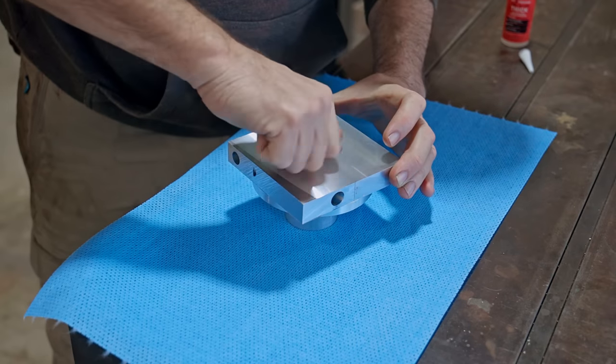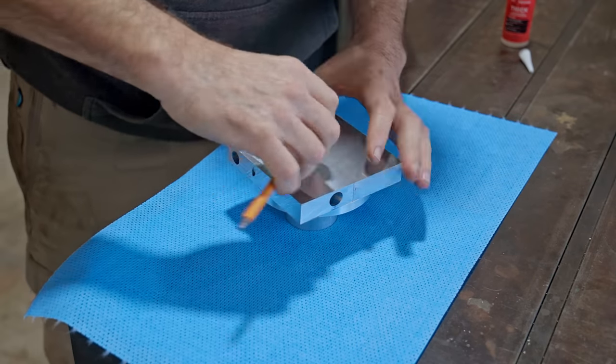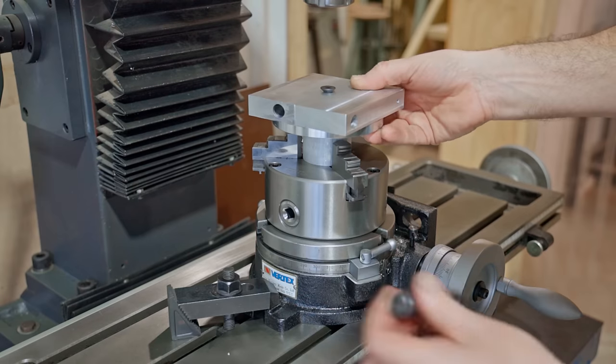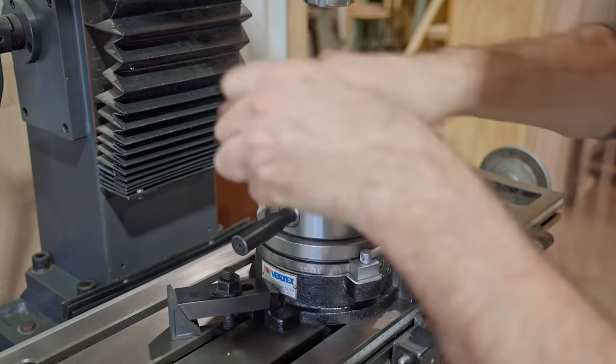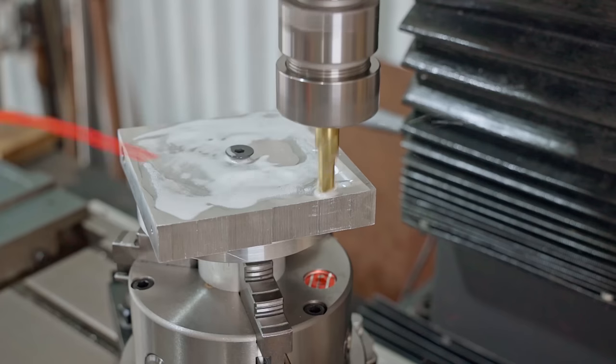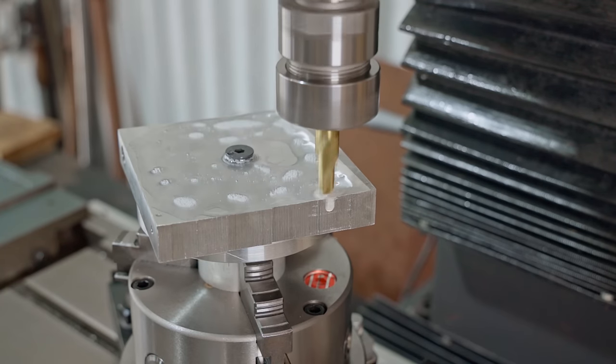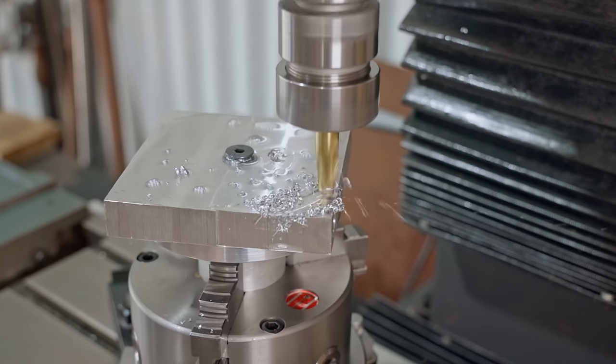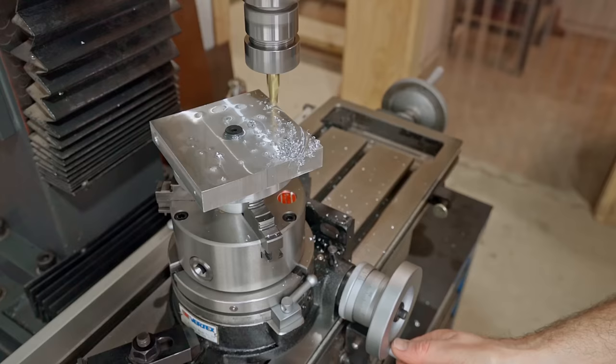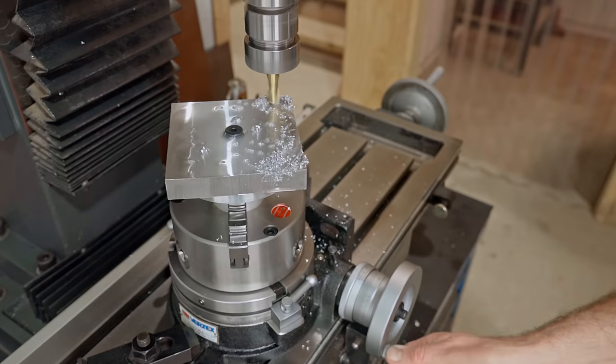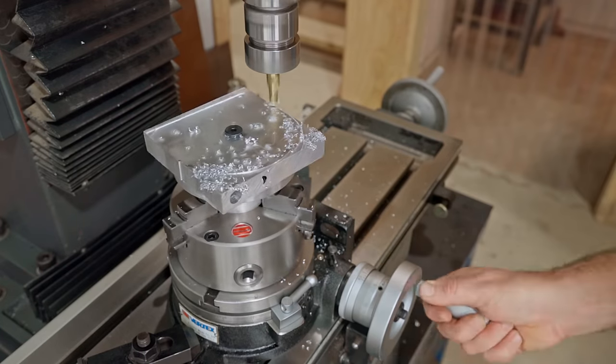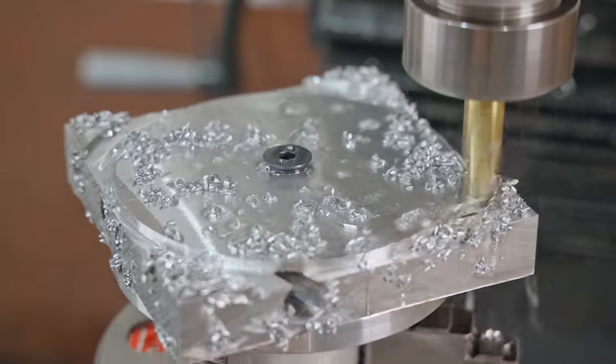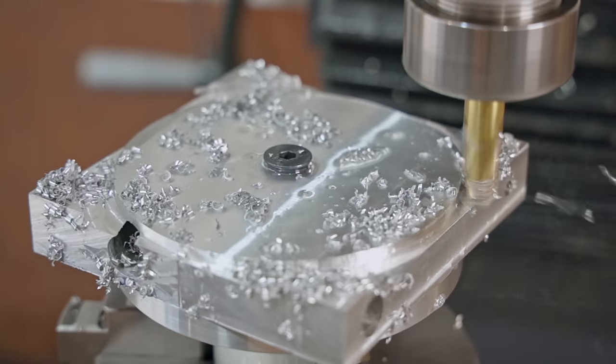I thought about using the lathe, but there's one operation that needs doing with the rotary table on the milling machine, so I thought I'd do the whole thing there. It's only the second time that I've used my rotary table. It's a fun tool and it's good that it's getting some use, as it wasn't a cheap purchase. As it's not the most stable setup, I'm making fairly light cuts. I'm in no rush and it's working well.